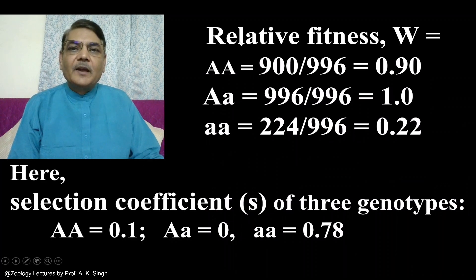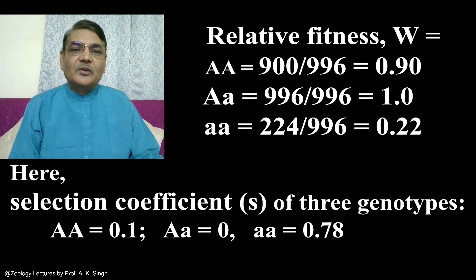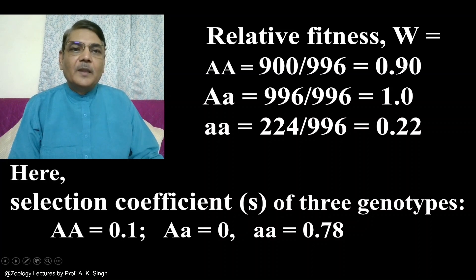To calculate relative fitness, the relative fitness of genotype AA will be 900 — since 900 offspring are of the AA type — divided by 996, because 996 is the highest number among the genotypes, belonging to the heterozygote Aa. So the number of a specific genotype divided by the highest genotype number: 900 divided by 996 gives 0.9. This is the relative fitness of the AA genotype.